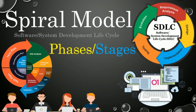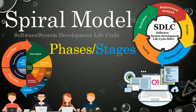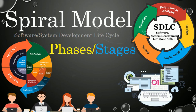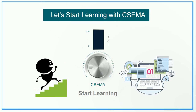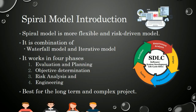Hi, welcome to CSCMA. Nowadays there are much more SDLC models available, but the spiral model is one of the most important software development lifecycle models that provides better functionality and environment to develop any software or software product. Let's start with a more detailed description about the spiral model.